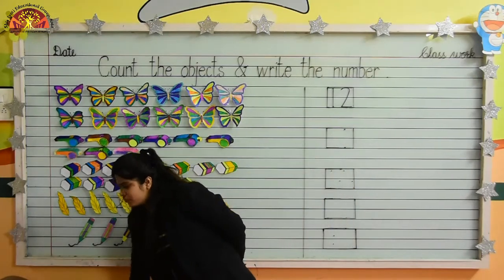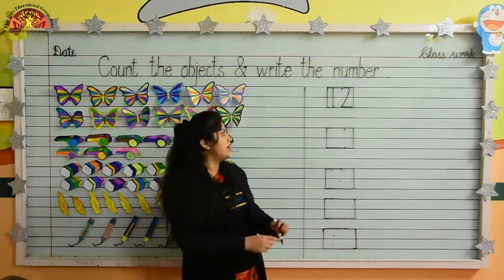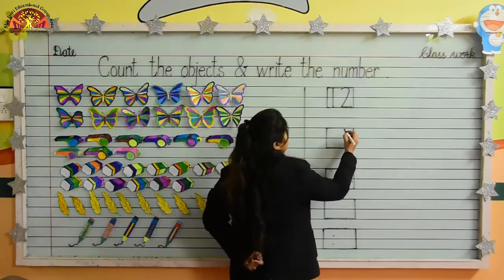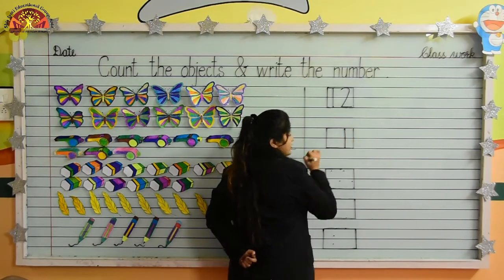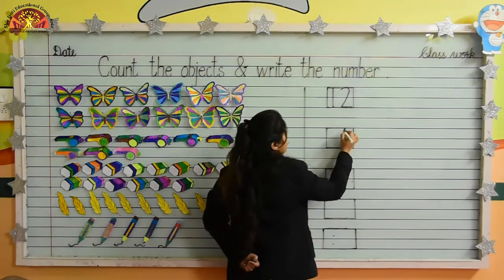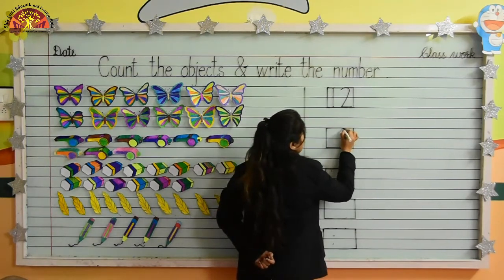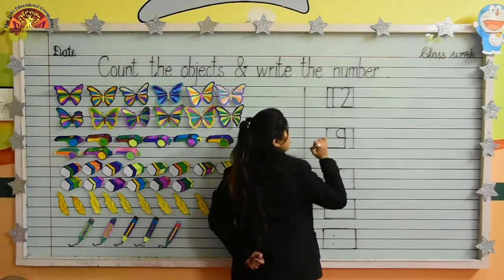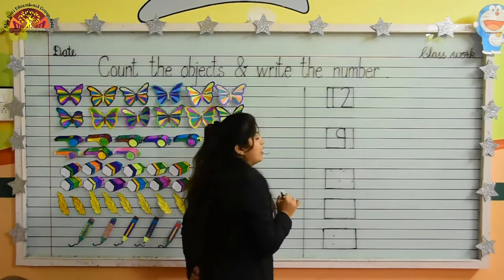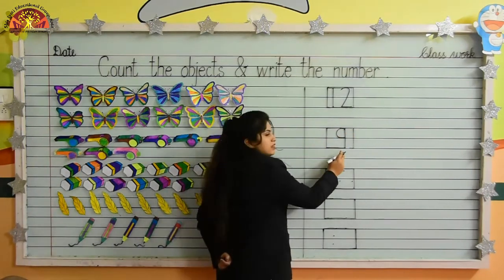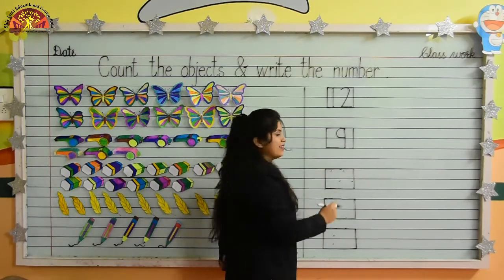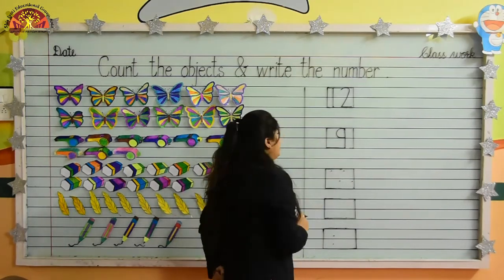Now we will write numeral 9. Put your crayon here, make a standing line like this. Now make a curve like this. Tell me kids, which numeral is this? This is numeral 9.